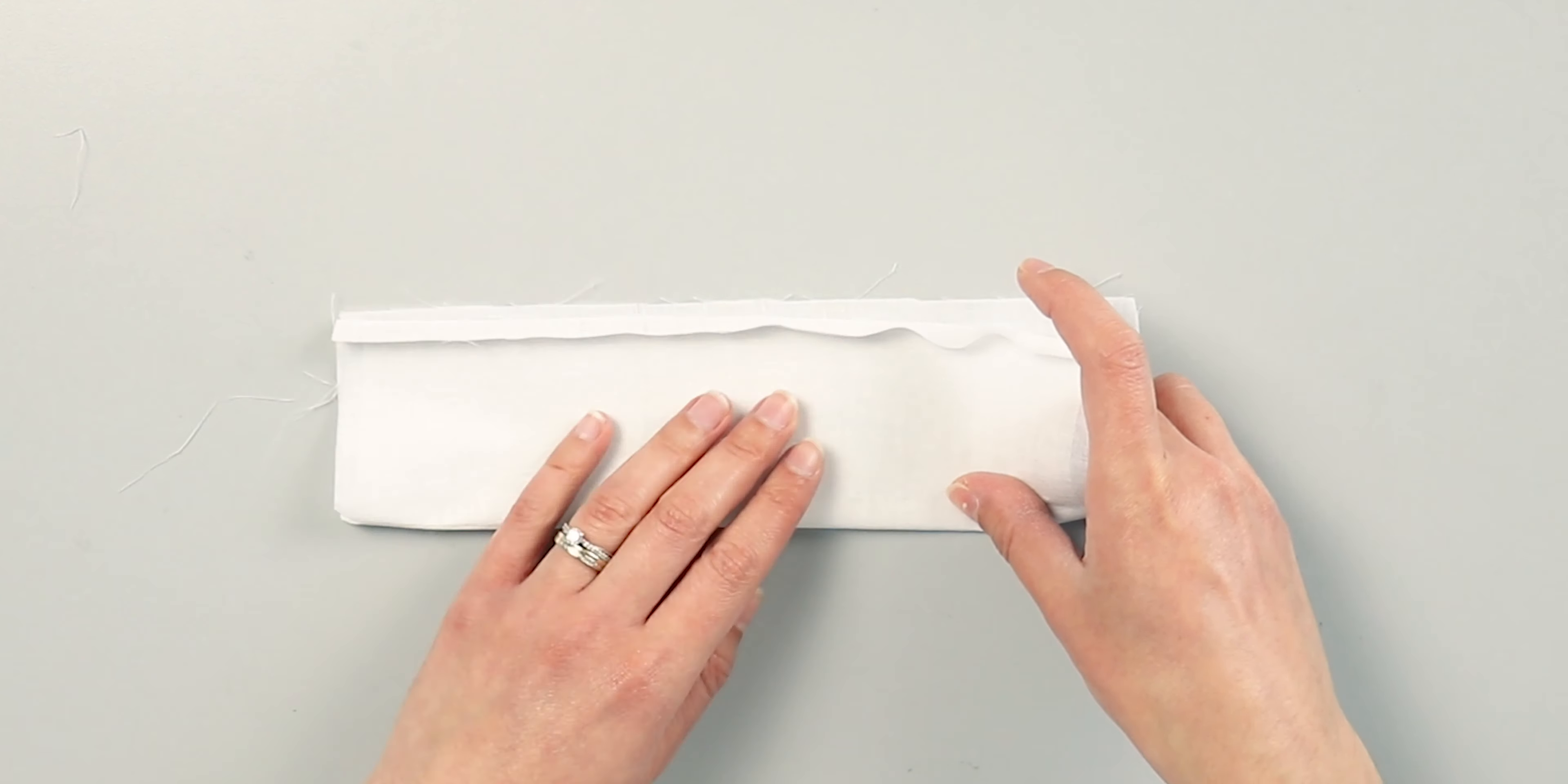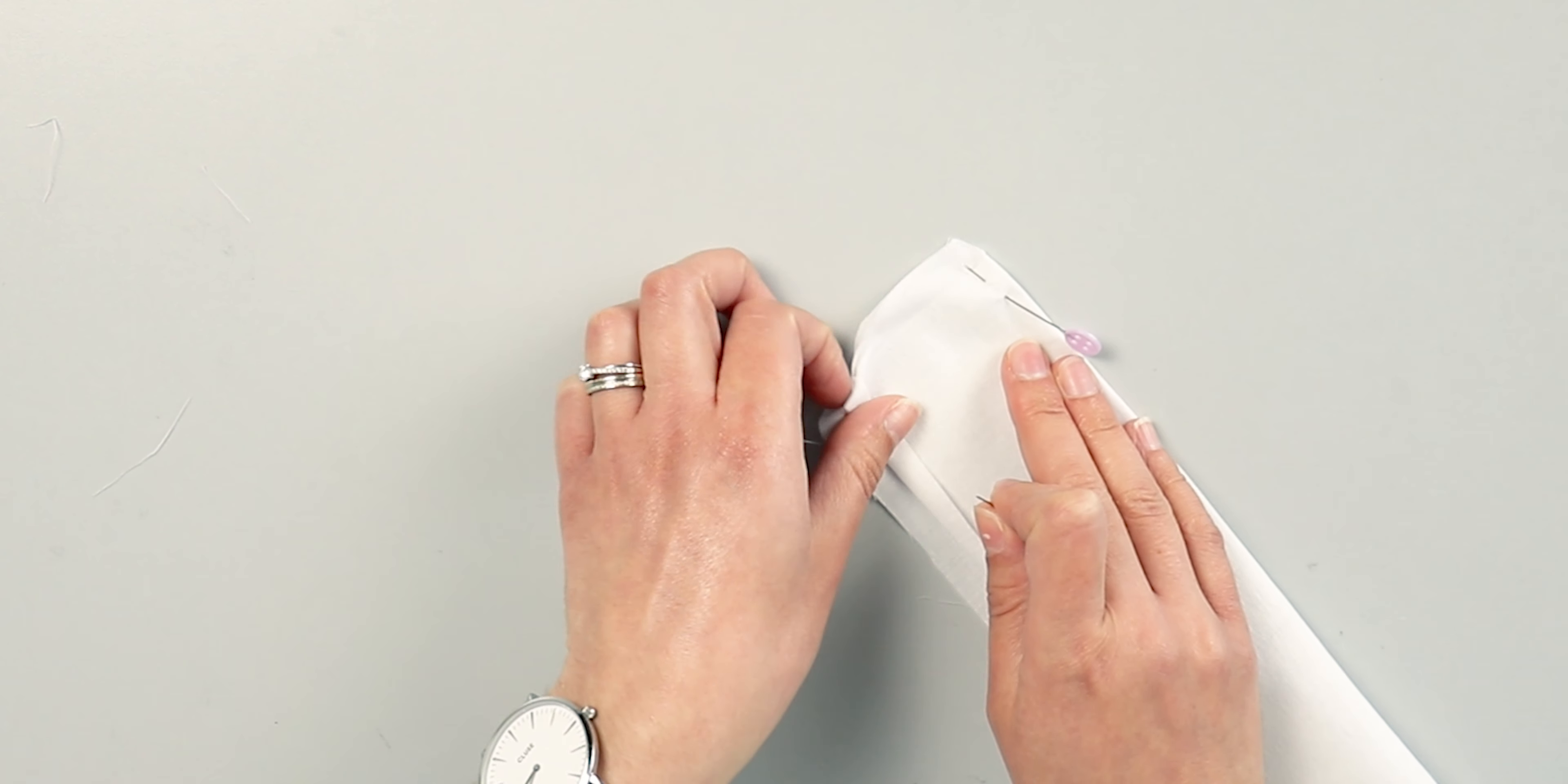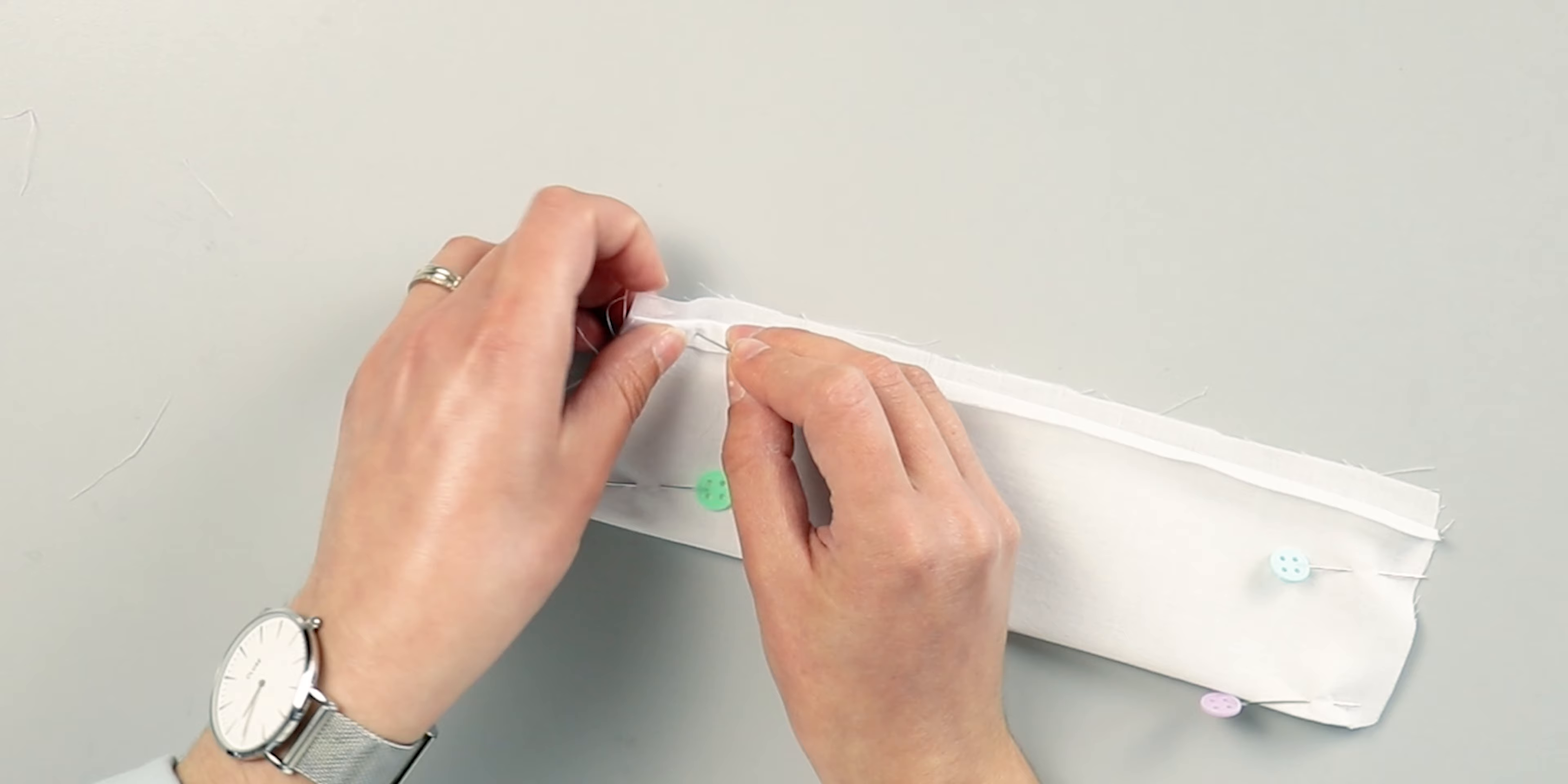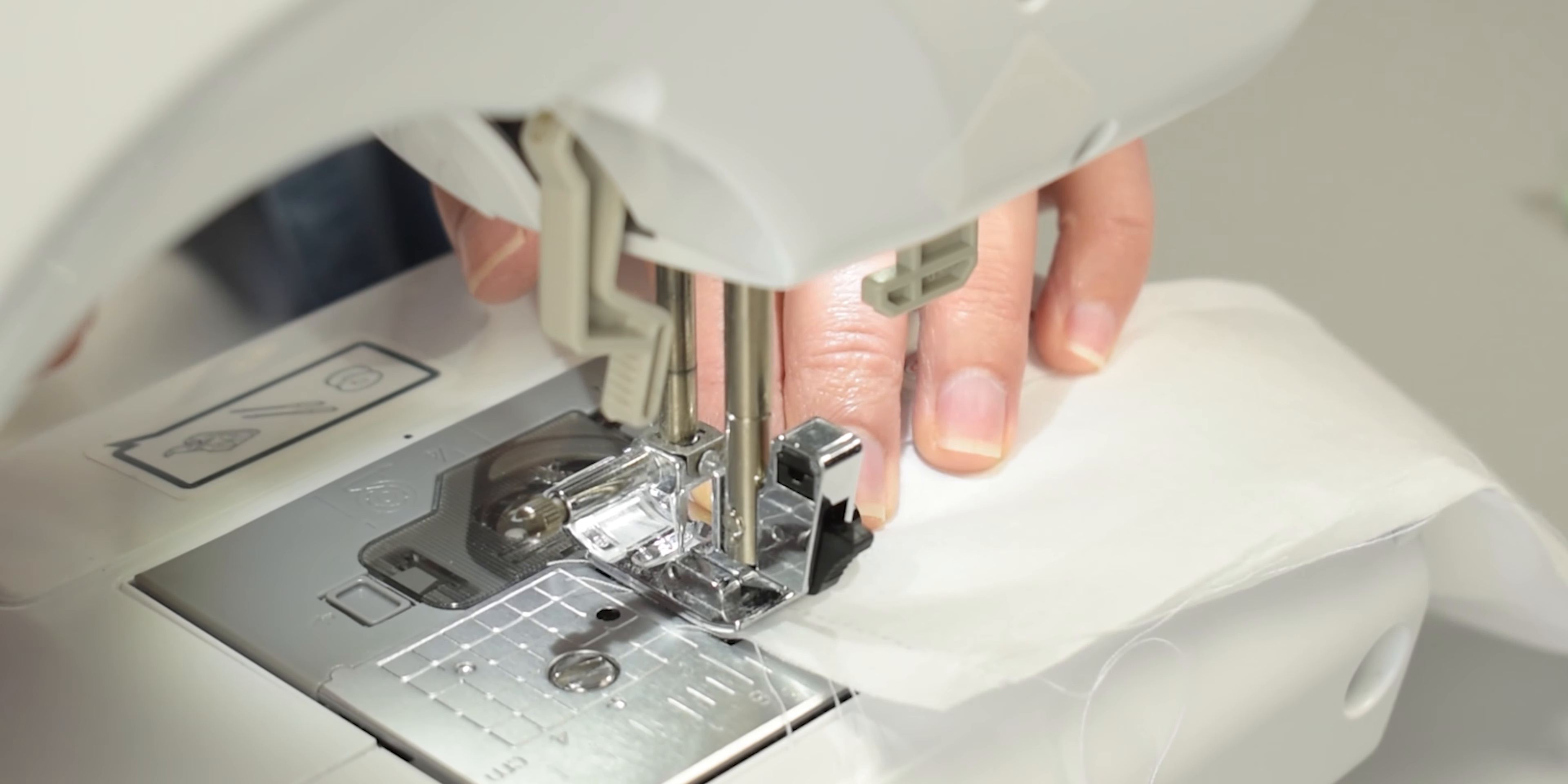Fold the cuff in half along the ironed fold line with the right sides facing each other. Sew the short ends and then turn it the right way round and iron.